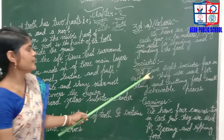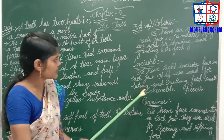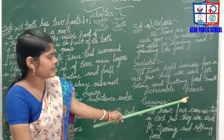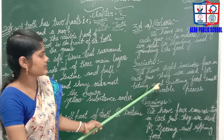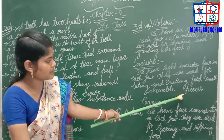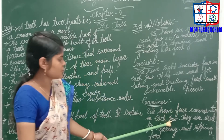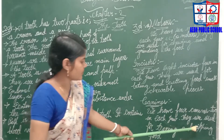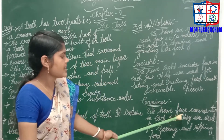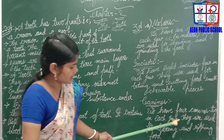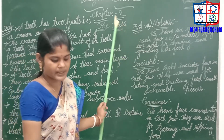Next, incisor: we have eight incisors, four in each jaw. They are used for biting and cutting food into small chewable pieces. The last one is canine: we have four canines, two in each jaw. They are used for tearing and grinding food. By this we have completed the third question.